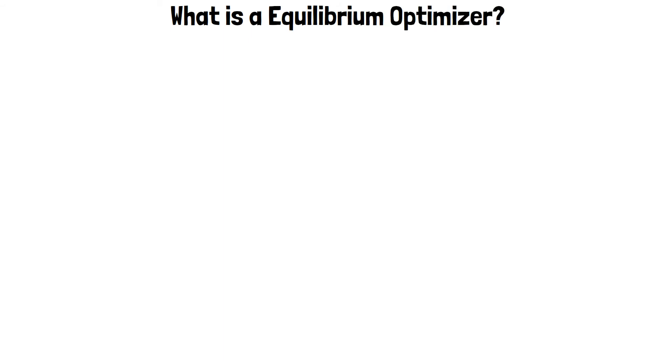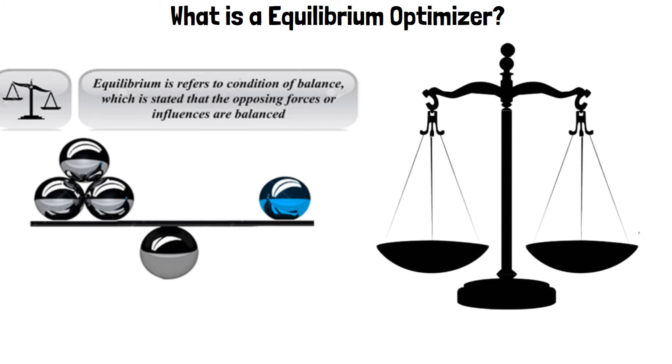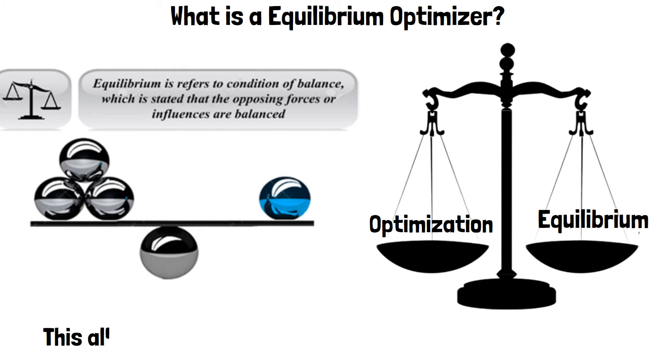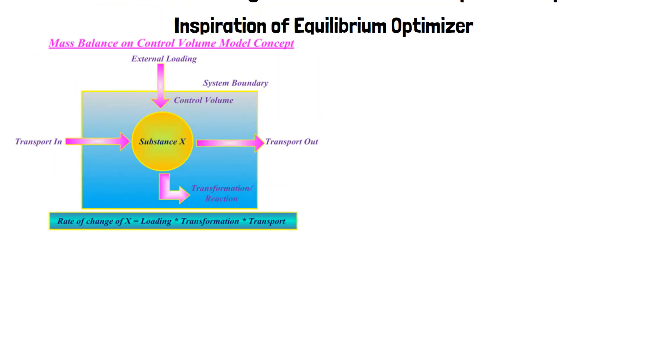Equilibrium is a state in which opposing forces are balanced. Optimization and Equilibrium models are used routinely in environmental engineering and science. This allows solving different kinds of equilibrium problems. The Equilibrium Optimizer